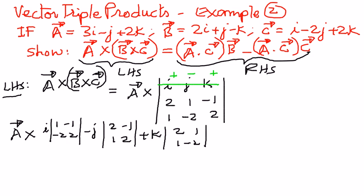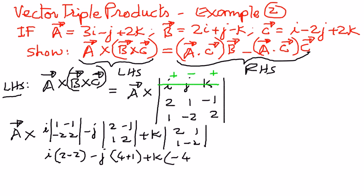Expanding: i times (1×2 minus (−1)(−2)) = i times (2 − 2) = 0i; minus j times (2×2 minus (−1)(1)) = minus j times (4 + 1) = minus 5j; plus k times (2×(−2) minus 1×1) = k times (−4 − 1) = minus 5k. So vector b cross vector c equals 0i minus 5j minus 5k.